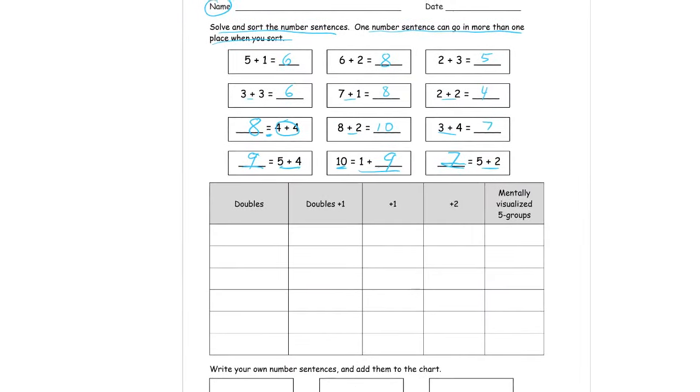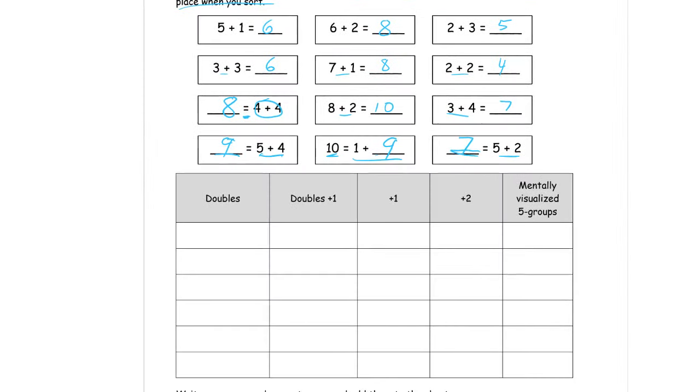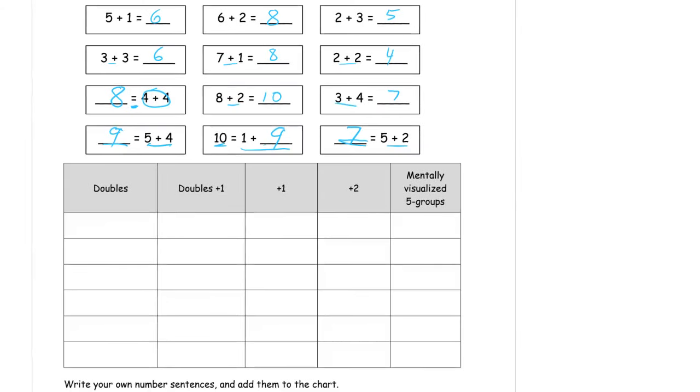Let me shrink this so we can see the chart and the equations that we have. So we're going to look, first we'll just do the doubles, right? We'll write down all the ones that are doubles that we see here. We have a 3 plus 3 equals 6. We have a 2 plus 2 equals 4. We have a 4 plus 4. I think that's all the doubles.